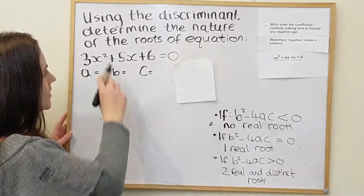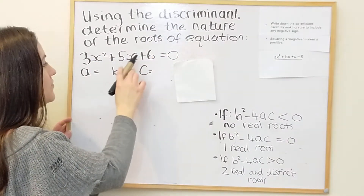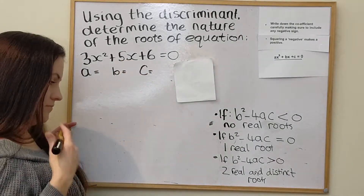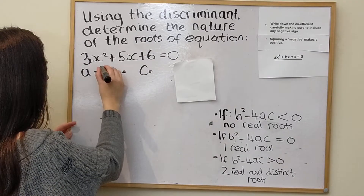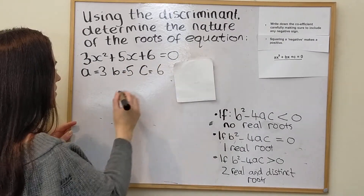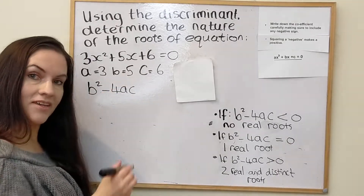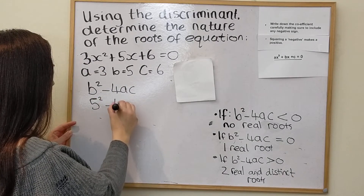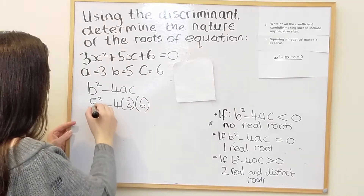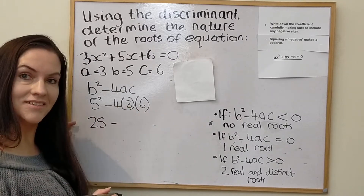Another example: using the discriminant to determine the nature of the roots of the equation 3x squared plus 5x plus 6 equals zero. As before, we write down the values of a, b, and c, making sure to include any negatives. So a is 3, b is 5, and c is 6. We then do b squared minus 4ac: 5 squared minus 4 times 3 times 6.